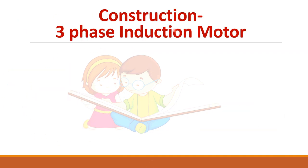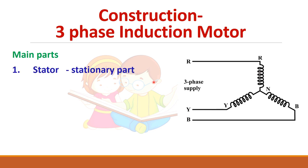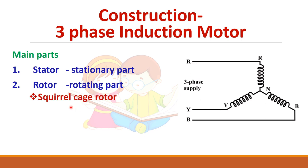The main parts in any electrical machine are the stator, which is the stationary part, and the rotor, which is the rotating part. In a three phase induction motor, the stator is very simple — it has three phase windings to which you give the three phase AC supply. The rotor can be either a squirrel cage rotor or a slip ring (wound) rotor.